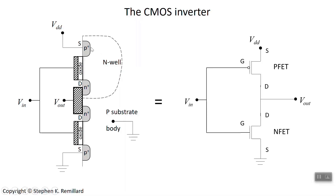Here's the equivalent circuit: the PFET is on top with its source going to the power supply, the drains connected together as the output voltage, the source of the NFET grounded, and the gates connected together as the input voltage. In the NFET symbol, a double line at the gate reminds you there's an oxide capacitance there. For the PFET symbol, a small circle at the gate indicates it's a PFET; without it, it's an NFET.